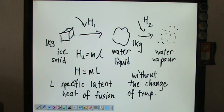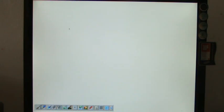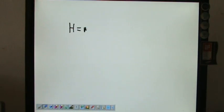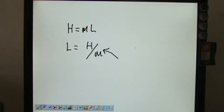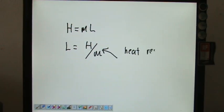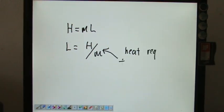This H2 also involves mL. We can define it here as H equals mL, so this L is H over m. From H over m you can define this as the heat required.